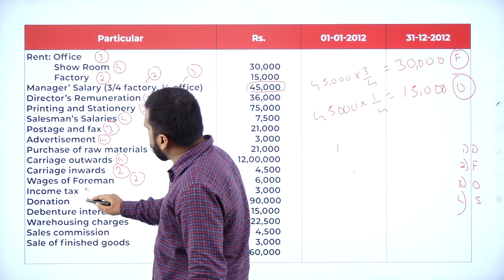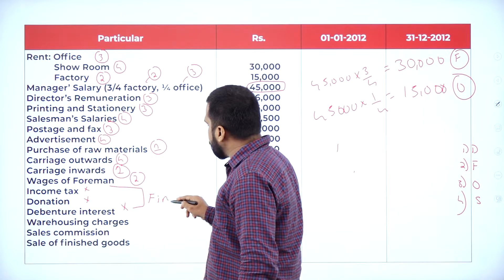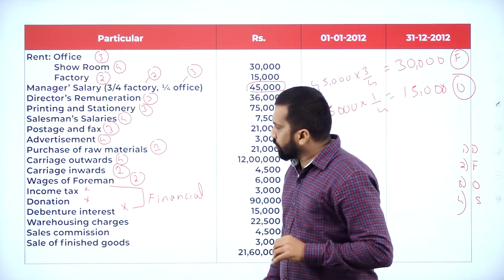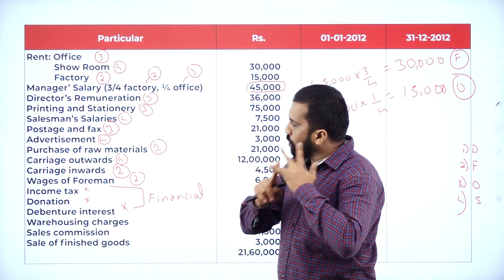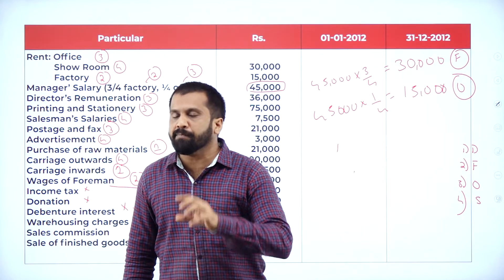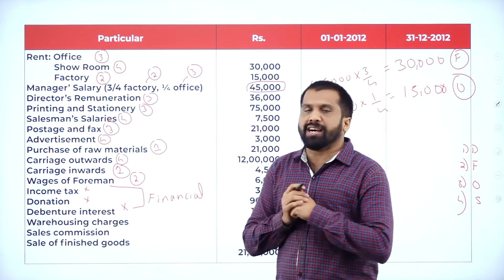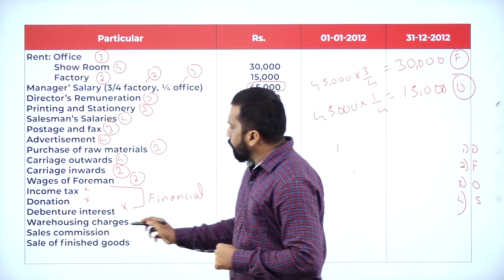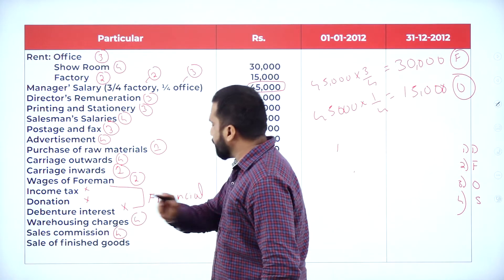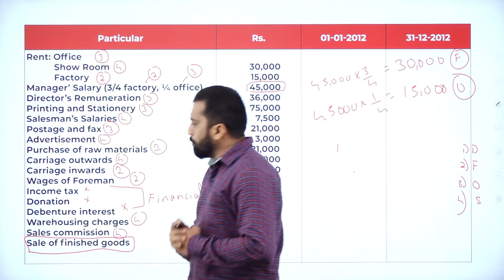Income tax, donation, and debenture interest — remember, these three are financial items. We are doing a cost sheet, not final accounts. In costing, income tax, donation, and debenture interest do not appear; these three are excluded. Warehousing charges come under selling and distribution. Sales commission also comes under selling and distribution. Sale of finished goods represents your total sales.